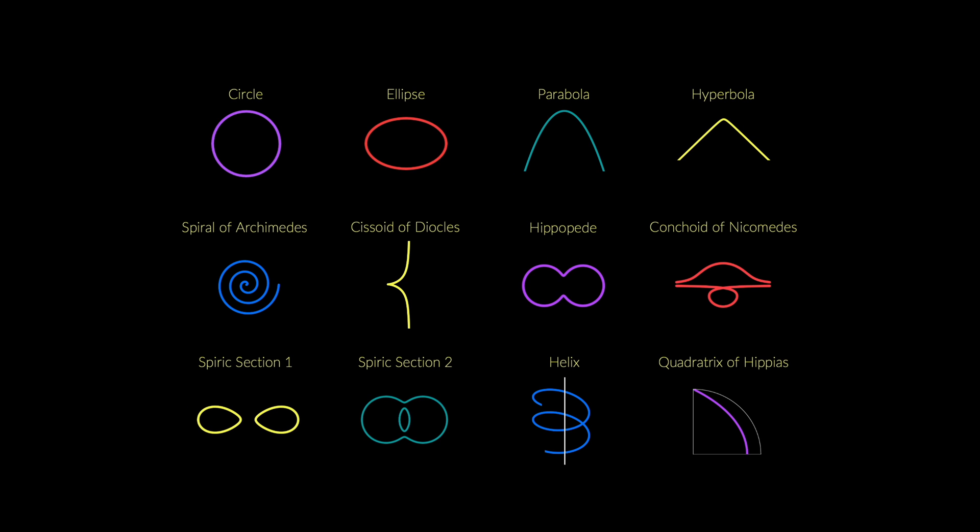Some of them are defined as the curves that are obtained by slicing solid geometric figures, like a cone, which we will talk about soon, or a torus. Others are defined as the curves that are obtained by some form of mechanical motion, and they are called mechanical curves.